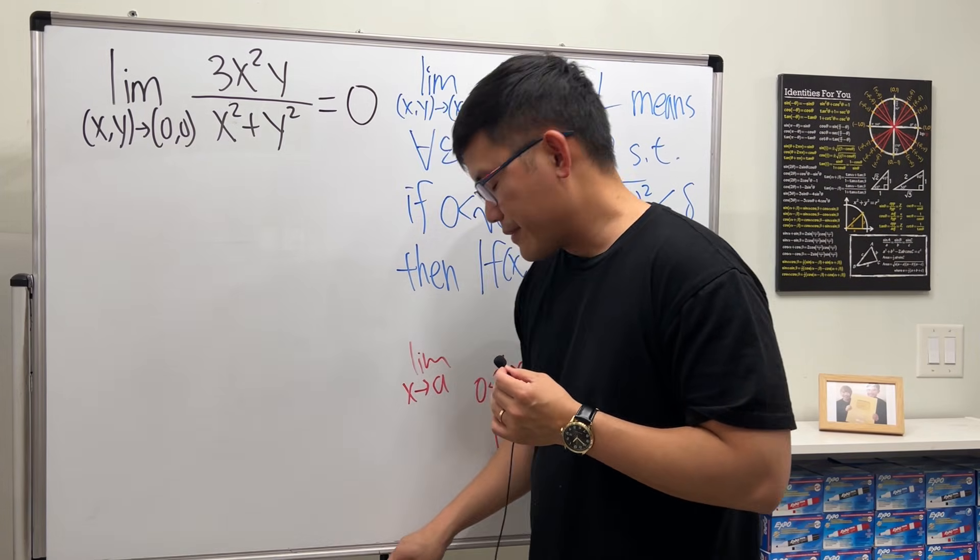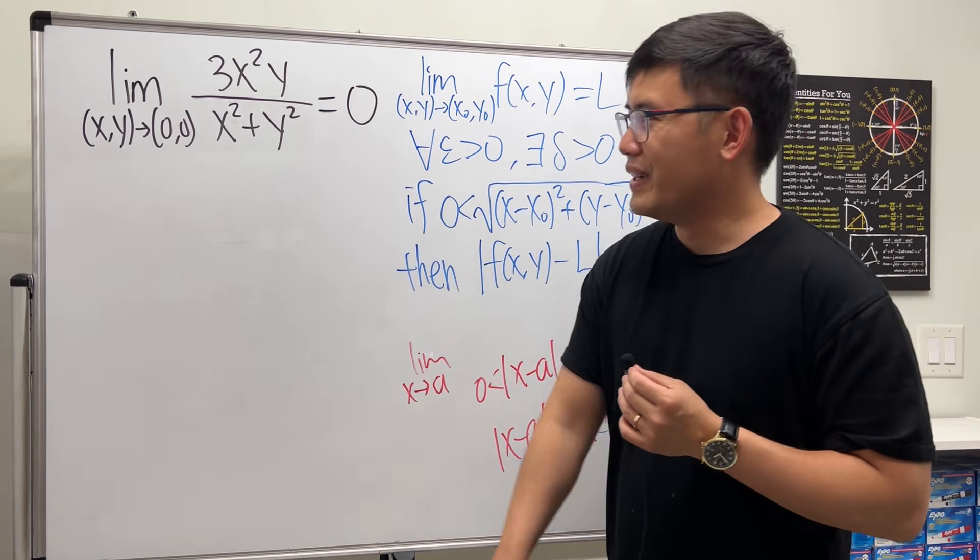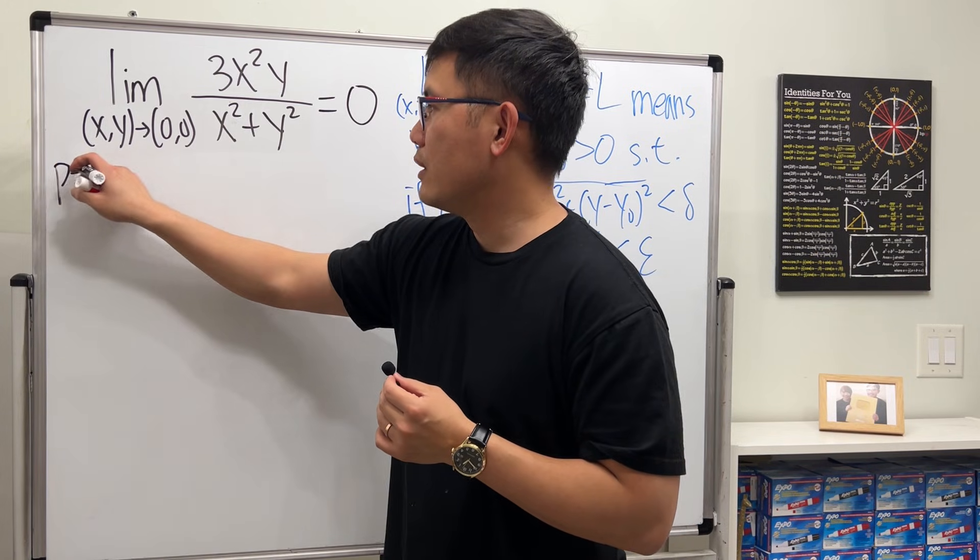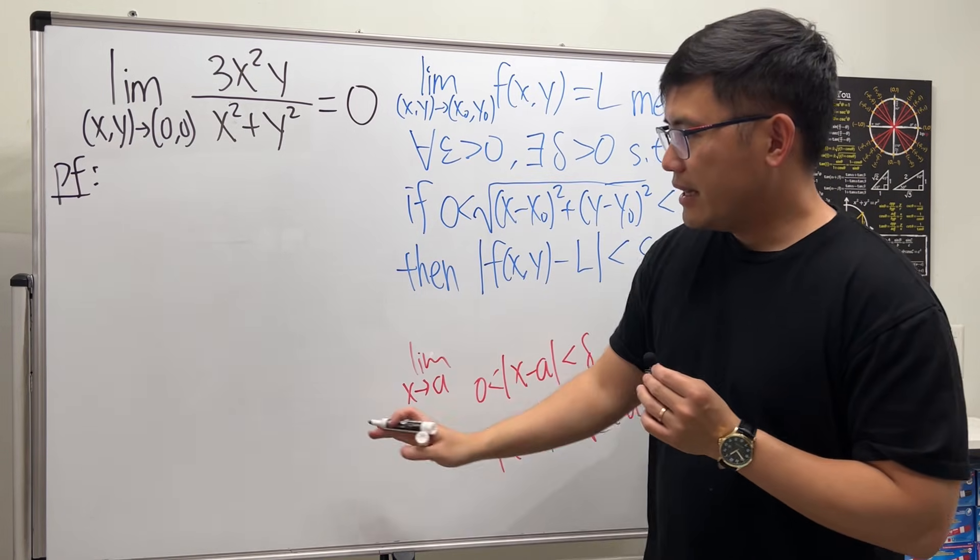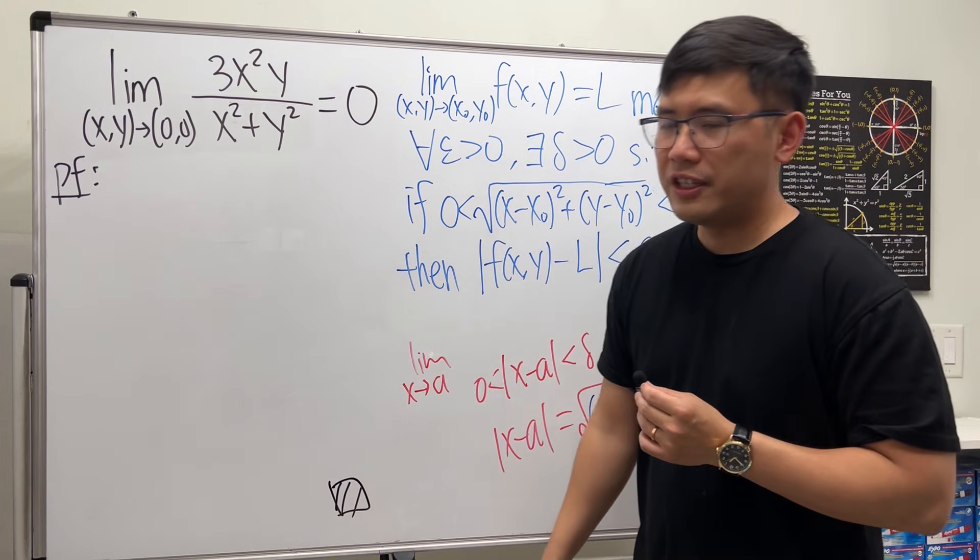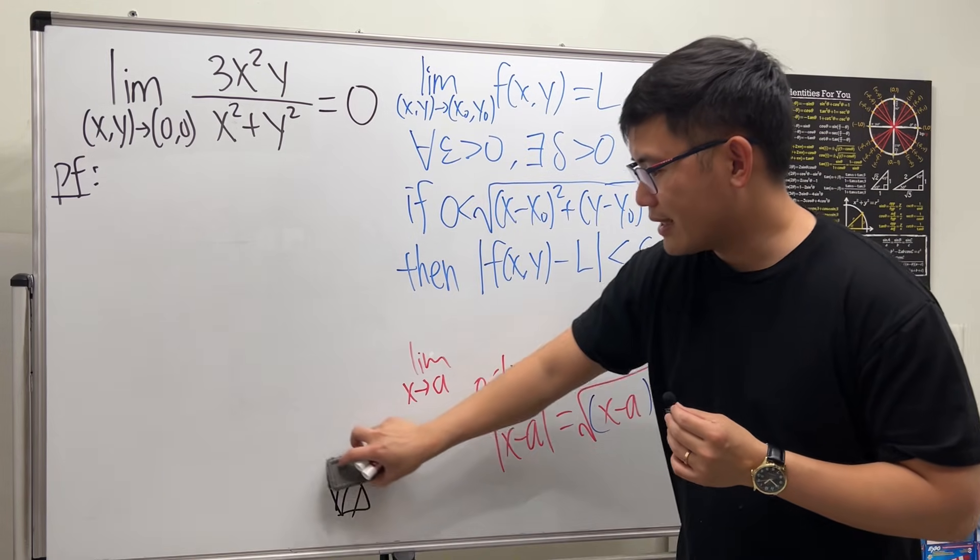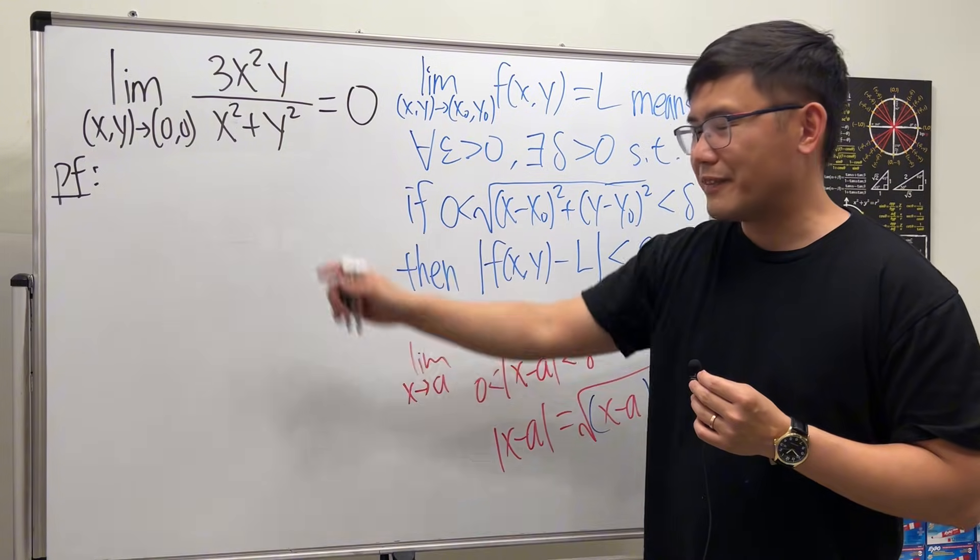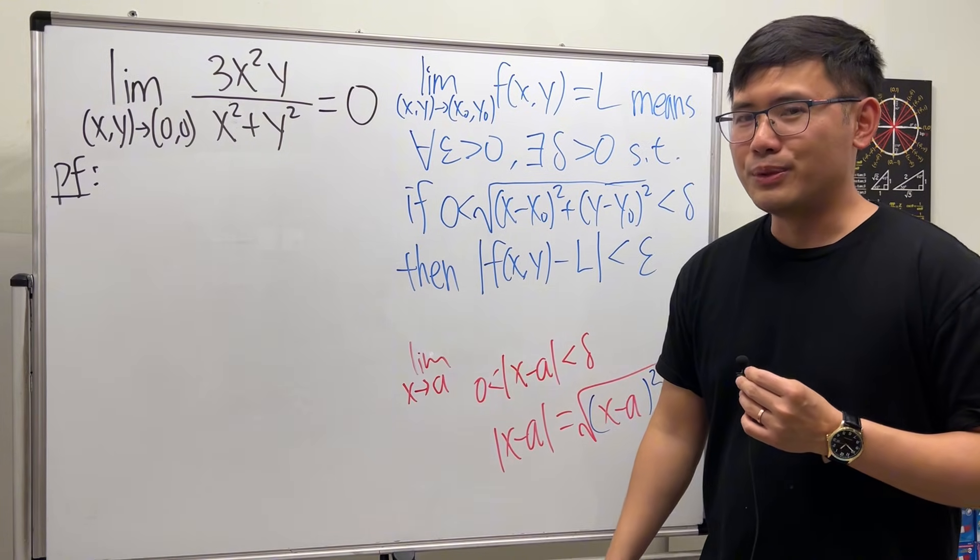First thing, you know it, write down pf. At the end, hopefully, we can legitimately put a box and then shade it in to show that we're done with the proof. But of course, I haven't done anything yet. I'm not allowed to do that yet.